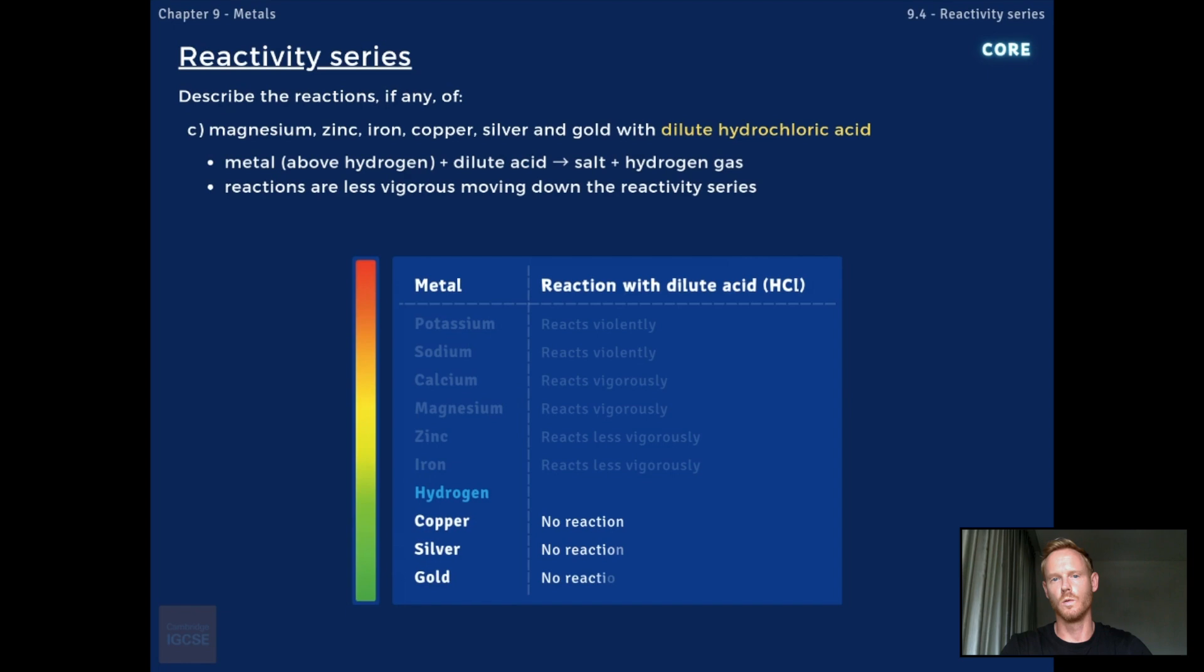Copper, silver, and gold do not react with dilute acids because they're less reactive than hydrogen and therefore cannot displace the hydrogen from the acid.